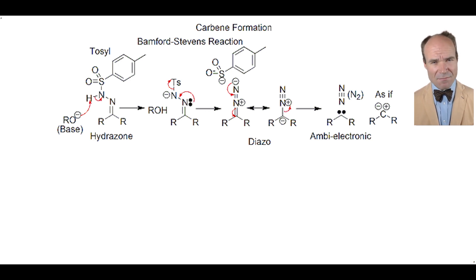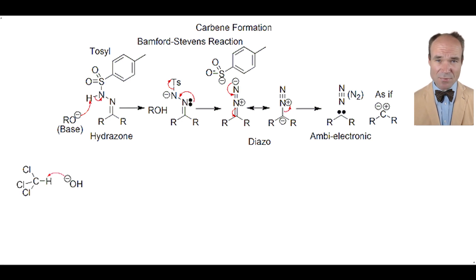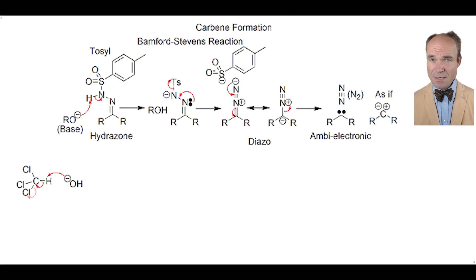Another method for forming a carbene is a hydroxide anion deprotonating chloroform to create dichlorocarbene.